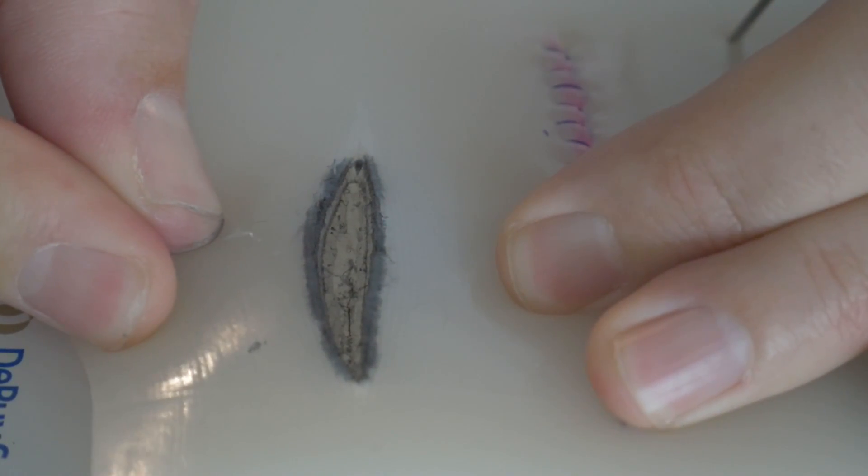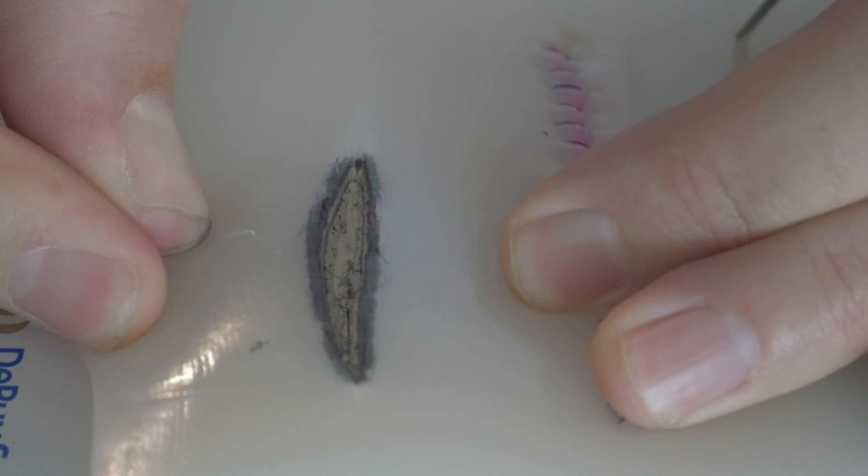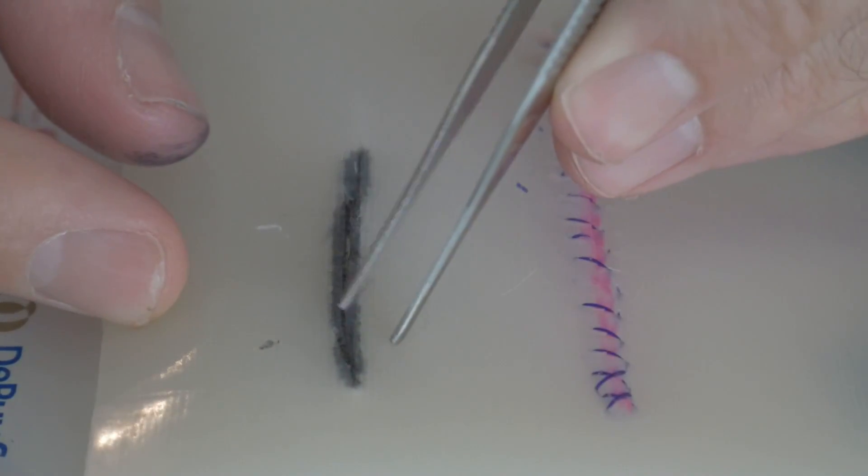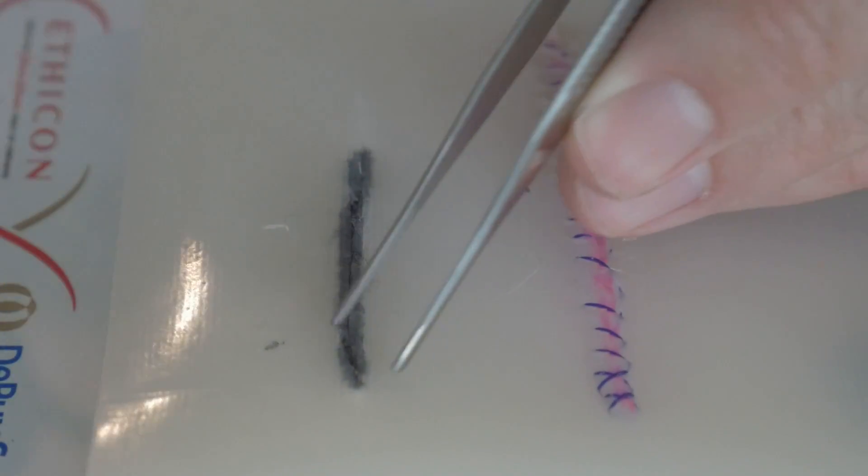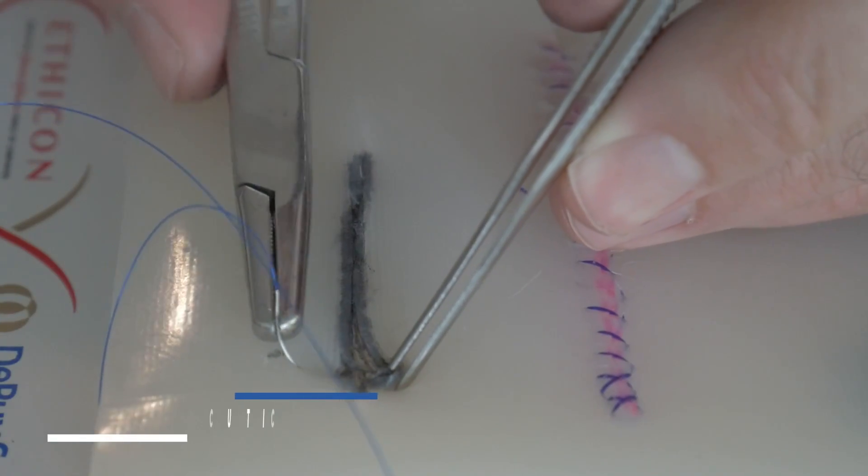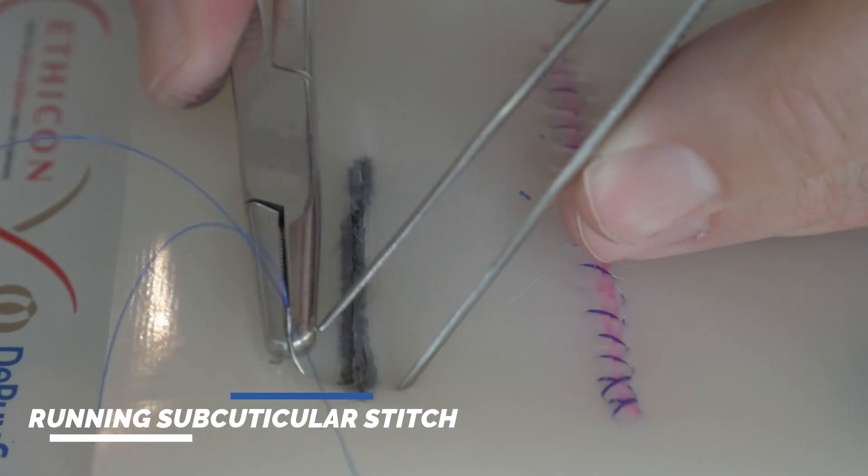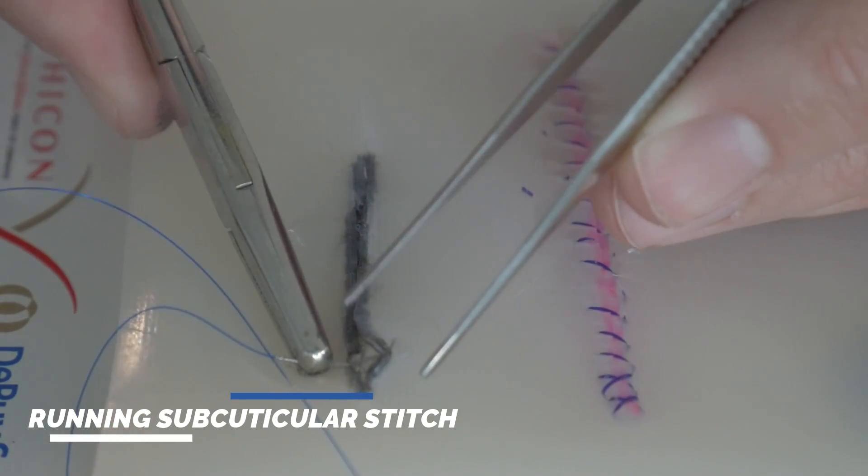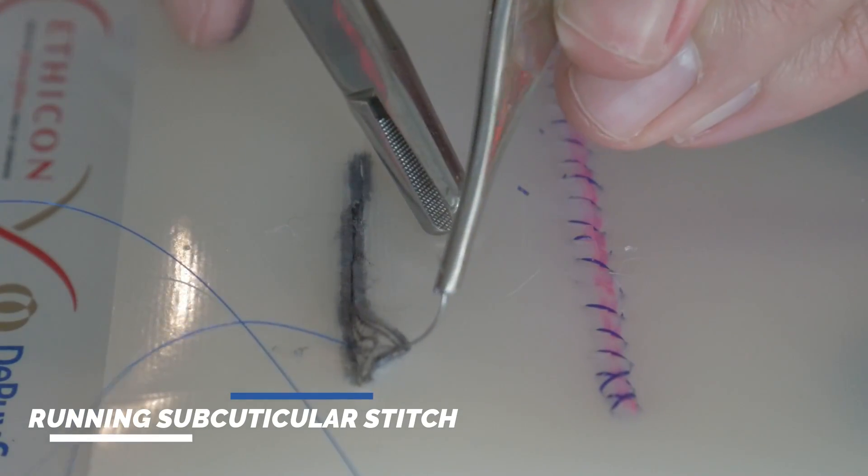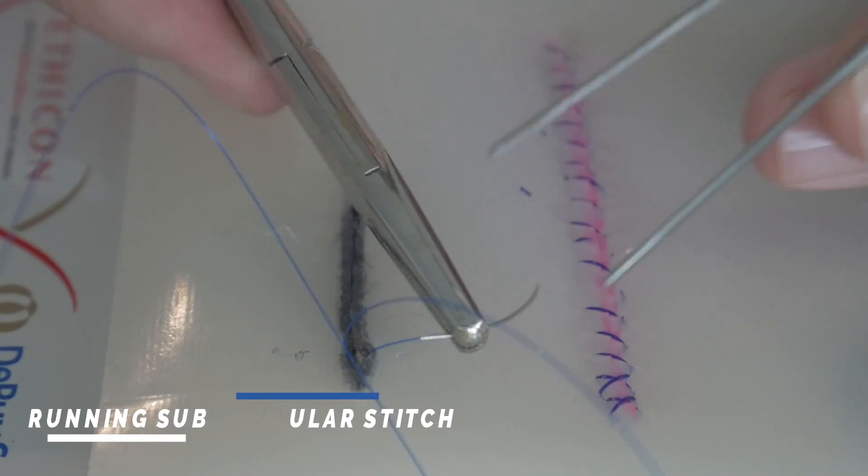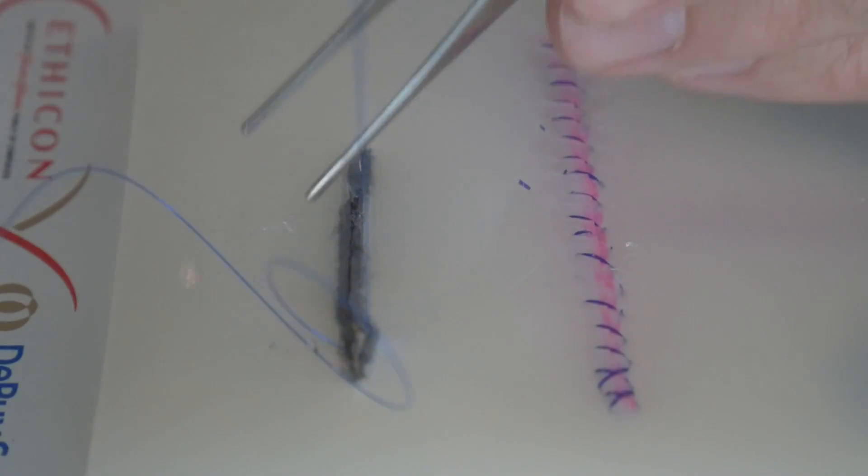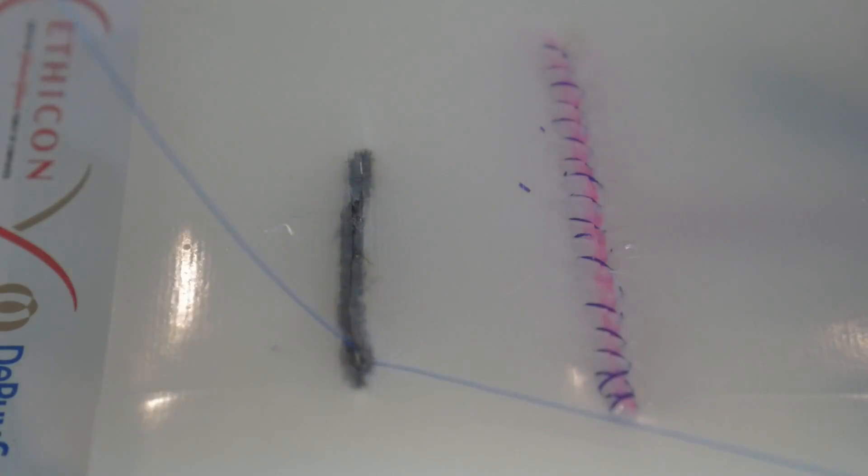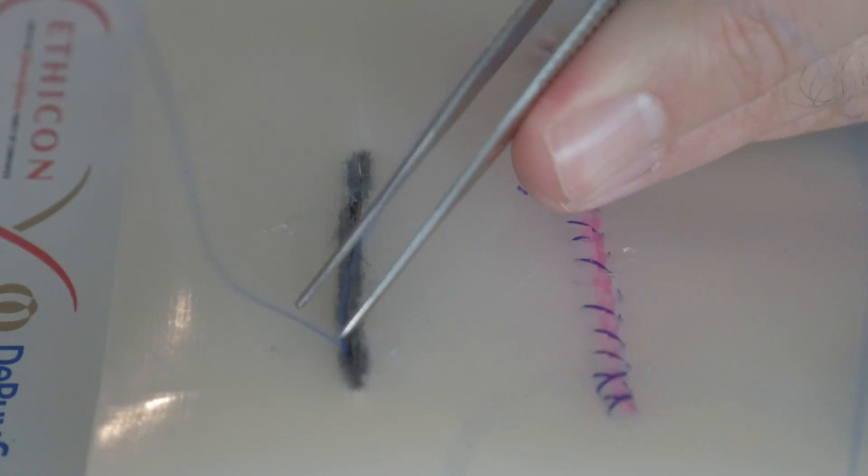All right, so I have some fake skin set up here, kind of cut it. It was really hard to cut and I tried to color it in with some Sharpie so you can actually see it. We're going to be doing a running subcuticular stitch. As you can see, this first bite I'm taking is deep to superficial. And then on the other side of the incision, once I get it through here, is going to be superficial to deep.